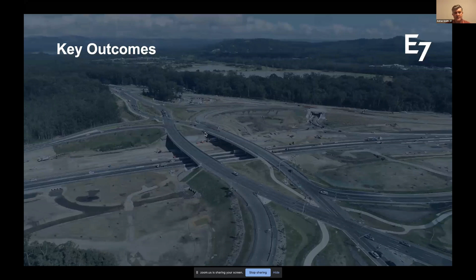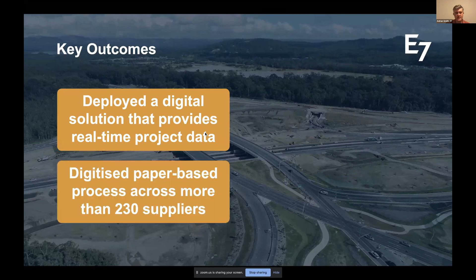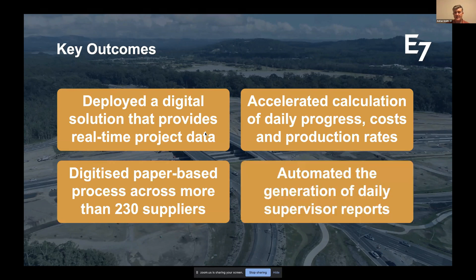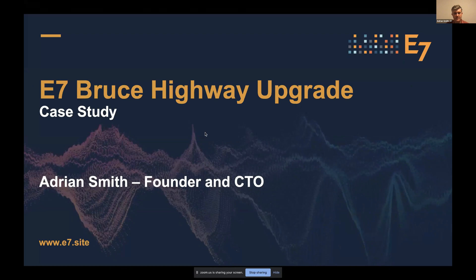To wrap up, the key outcomes on this project: we've deployed a digital solution providing real-time data for decision making; we've digitized a paper-based process across more than 230 supplier companies; the process has accelerated calculation of daily costs and production rates — by 10am the next day, teams know what they spent and what physical progress was achieved. We've also generated a large volume of automated daily reports giving supervisors actionable insights. I'm Adrian Smith — thank you very much for the time and opportunity to present.